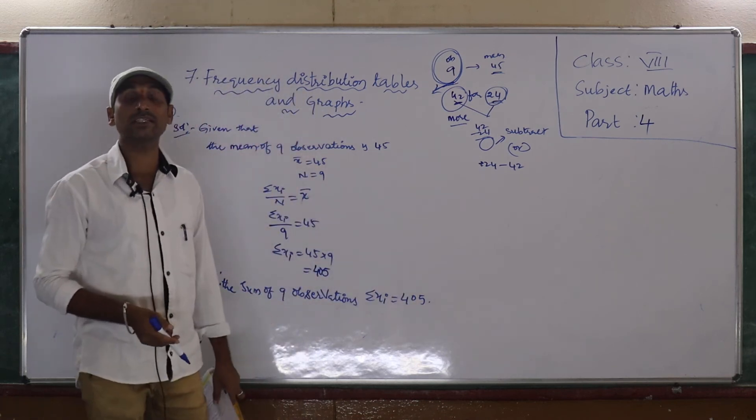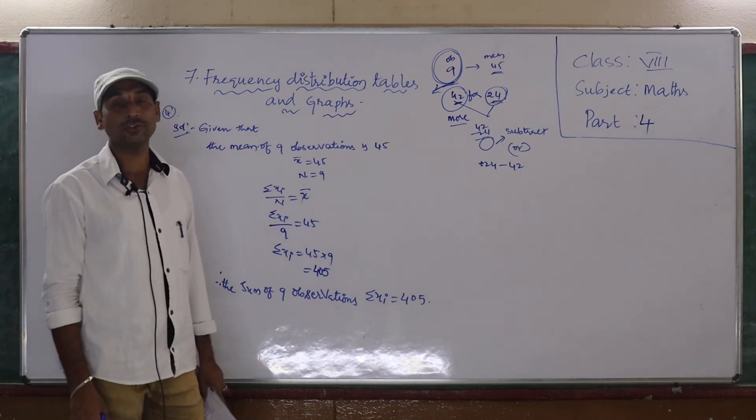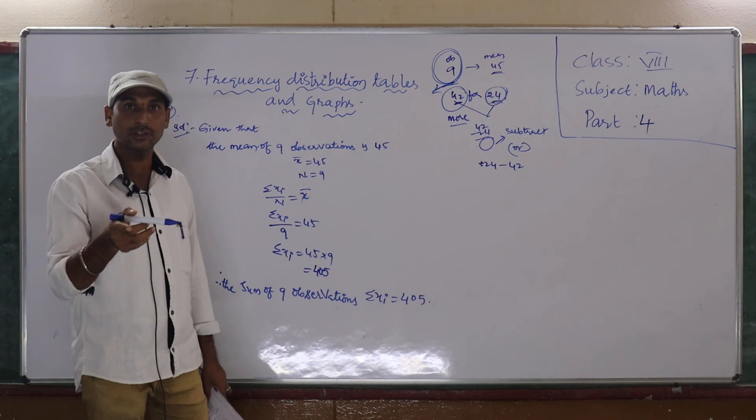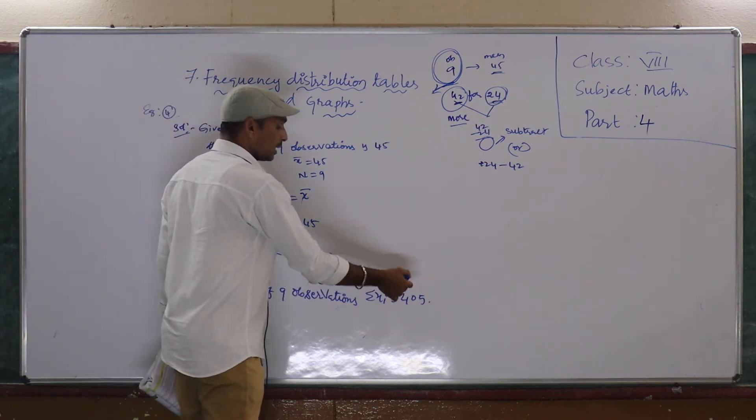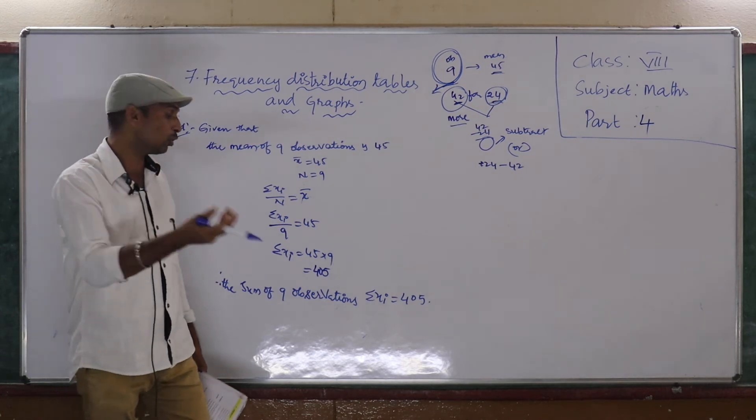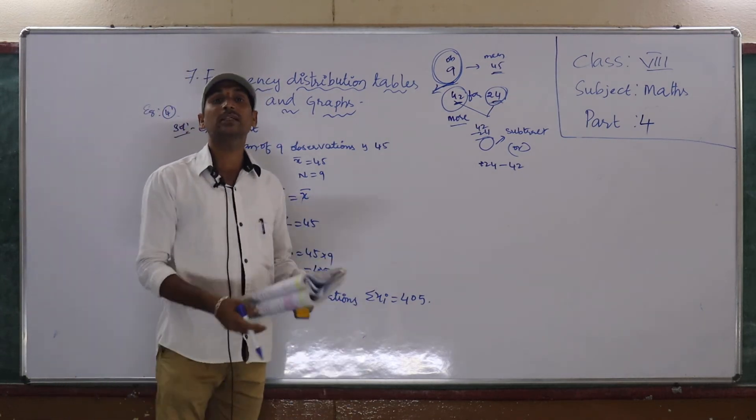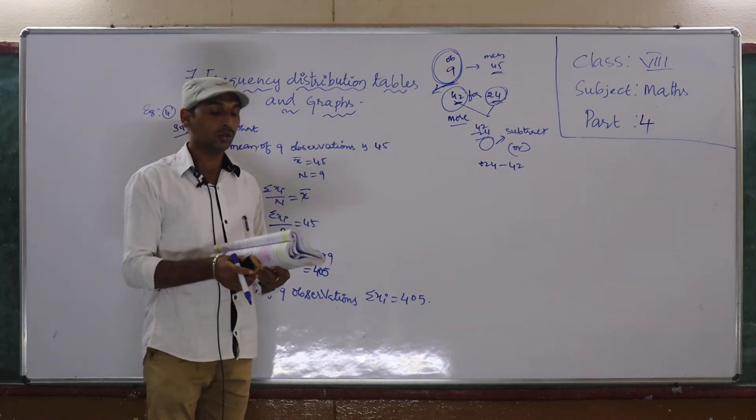In that 9 observations also, we are not taking 24. We are taking 42, not 24. So that is why, this sum of 9 observations, we are getting more. So how much more, that value, we have to subtract from this to get correct answer.